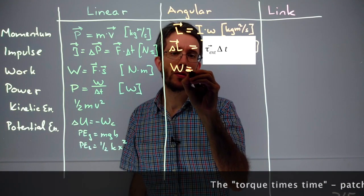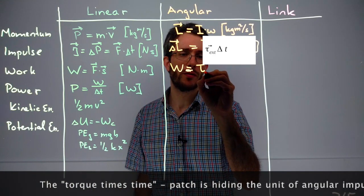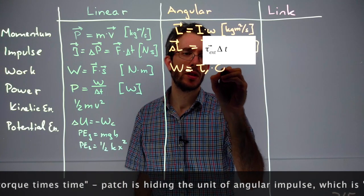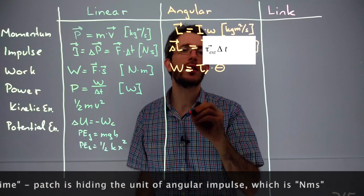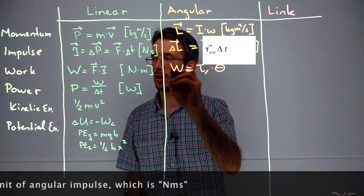torque times delta t. And for work, if you have something that rotates, so the magnitude of the torque can be calculated as the amount of torque times the theta, here the torque that is around the same axis as your rotation. So that torque times theta will give you the work.